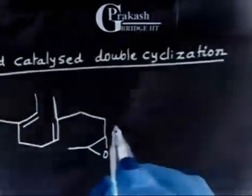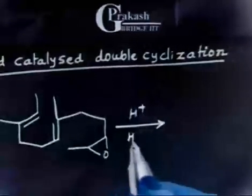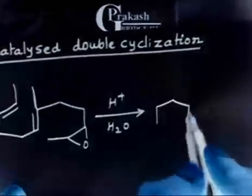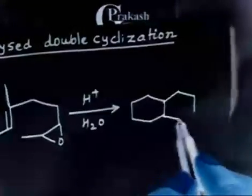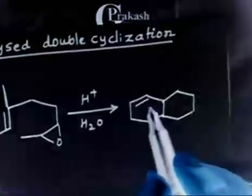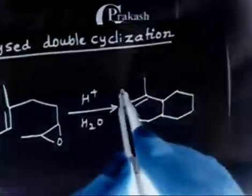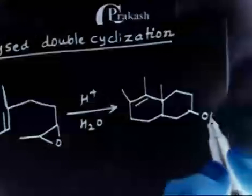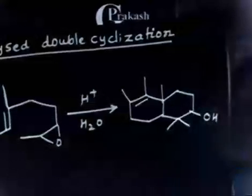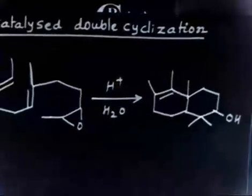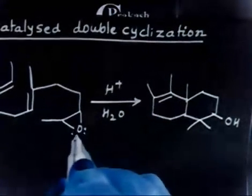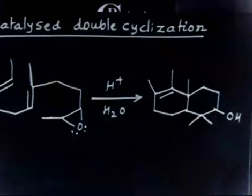Now if I treat this compound with H+ in the presence of H2O, the final product — the book writer is getting, maybe proposing as a problem — has OH here and also OH here. So this is the final product. You see in the last question we have done the same thing. Now you have to propose the mechanism.